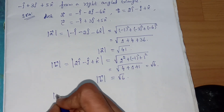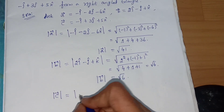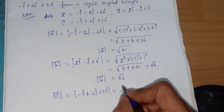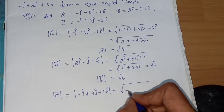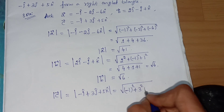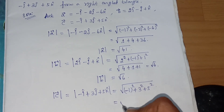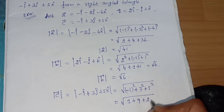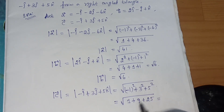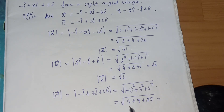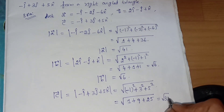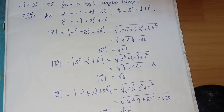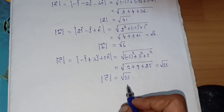Next, magnitude of c vector: c vector is (-i + 3j + 5k). |c| = √((-1)² + 3² + 5²) = √(1 + 9 + 25) = √35. So the magnitude of c vector is √35.